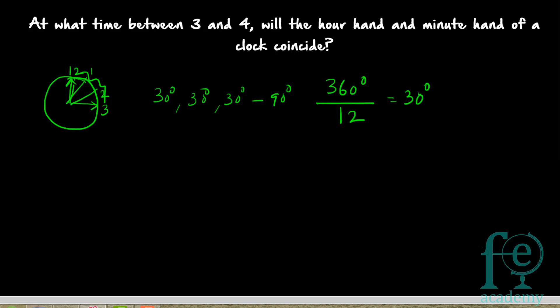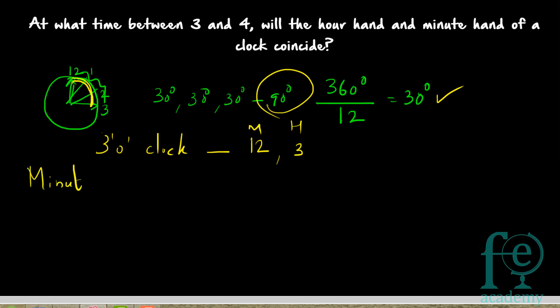So, between 12 and 3, the minute hand has to traverse a distance of 90 degrees in order to coincide with the hour hand. That is the first step — you have to find out how much distance the minute hand has to travel. At 3 o'clock, the minute hand is at 12 and the hour hand is at 3, so from 12 to 3 is 3 hours, which equals 90 degrees. The minute hand has to travel a distance of 90 degrees.